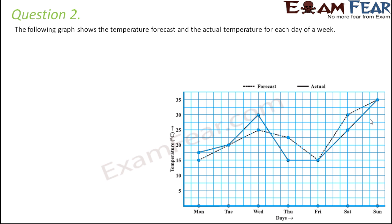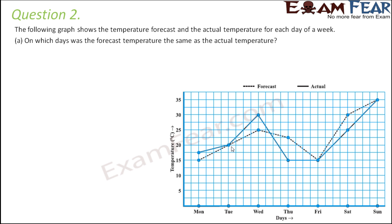Question 2: the following graph shows the temperature forecast and the actual temperature for each day of the week. On which days was the forecast temperature the same as the actual temperature? The solid line is the actual temperature and the dotted line is the forecast. Where both lines intersect, both values are the same — those days are Tuesday, Friday, and Sunday.